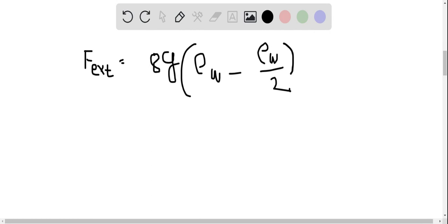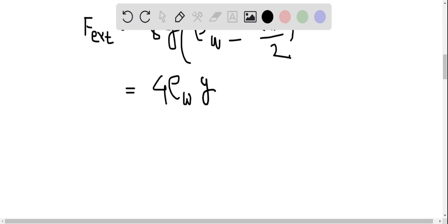If you perform the simple mathematical calculation here, we have 4ρwg. In this question, we take the water density as 1000, which is in SI units.